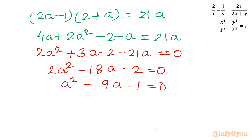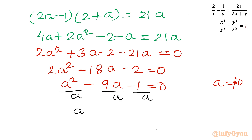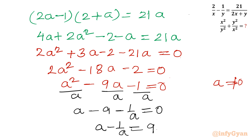Since x and y cannot be 0, a cannot be 0. So I can divide the equation a² minus 9a minus 1 equals 0 by a, giving a minus 9 minus 1/a equals 0. Therefore a minus 1/a equals 9. This is our key result from Method 2.